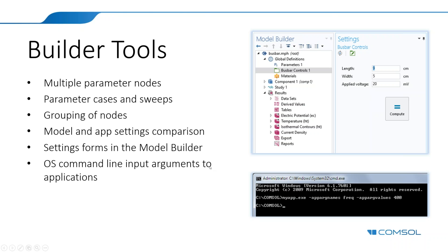For applications started from the command line, you can now create input settings in the application builder to define command line arguments. So you can start an application with input arguments from the operating system command line — for example, from the Windows command prompt. The same is true for Mac and Linux. You can give a frequency and a frequency value as input arguments to an app.